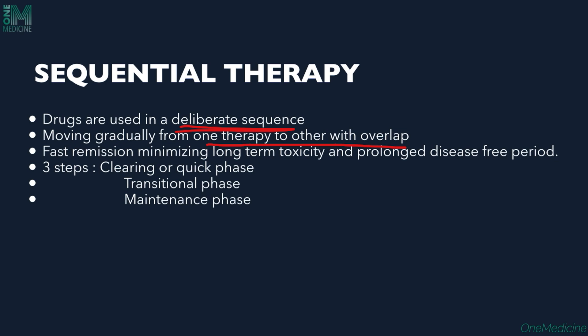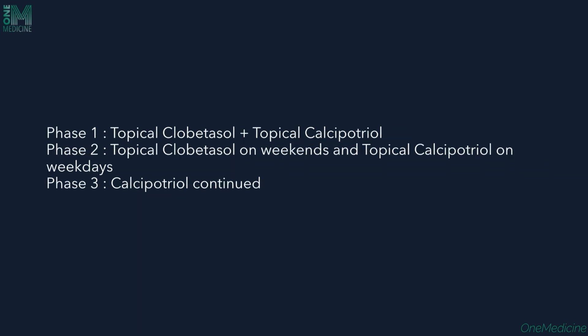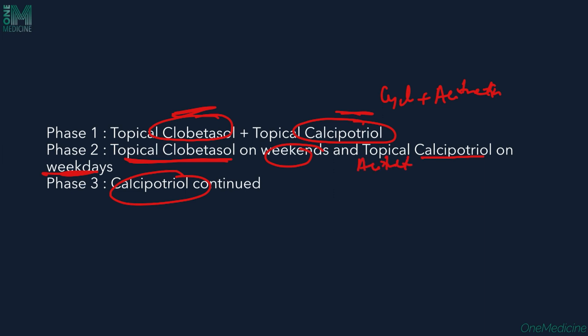In sequential therapy, drugs are used in a deliberate sequence with overlap, moving through three phases: clearing phase, transitional phase, and maintenance phase. For example, in the first phase combine high-potency topical clobetasol with calcipotriol. In the transitional phase, give clobetasol on weekends only and calcipotriol on weekdays. In the maintenance phase, continue only calcipotriol. Similarly, cyclosporine plus acitretin can be used, stopping cyclosporine once control is achieved and continuing acitretin alone.